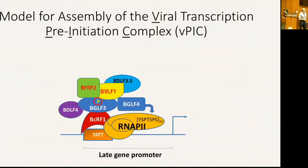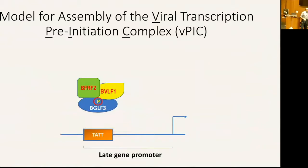We refer to this group of proteins as late gene regulators. I'm going to focus on one specific point: BGLF3 is phosphorylated, and phosphorylation is important for recruitment of BFRF2 and BVLF1. We have identified a single phosphorylation site, and if you abolish this single phosphorylation, you basically abolish expression of late genes and production of new virus particles.